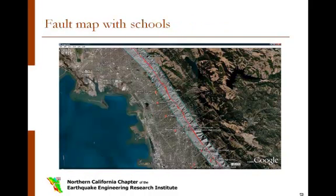In 1995, it would have taken some time to plot all the schools within the Hayward Fault zone. This is an example of a Google Earth map showing public schools located in the fault zone. There are still K-12 school buildings that require retrofit in the Hayward Fault region.